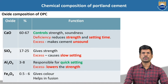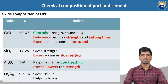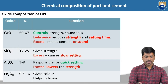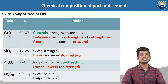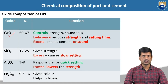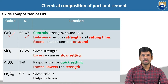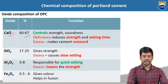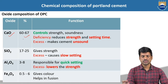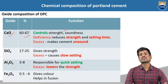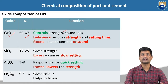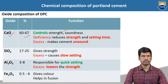Now coming to the chemical composition of Portland cement. We will be having different chemicals in the manufacturing of cement. The first one is calcium oxide — this is the major material, an example for calcareous materials. It will be obtained from limestone. The percentage of calcium oxide is 60 to 67%. The function is it is going to control the strength — whatever the required strength we need, that strength will be controlled by using calcium oxide.